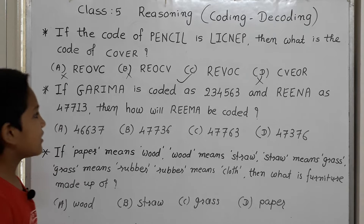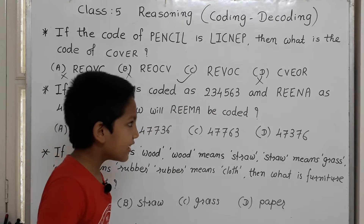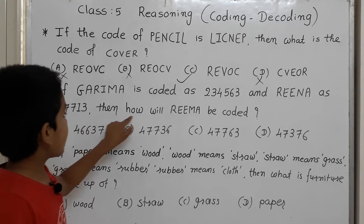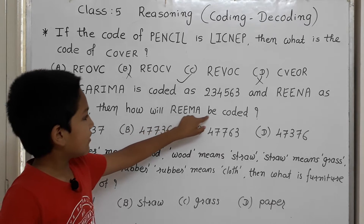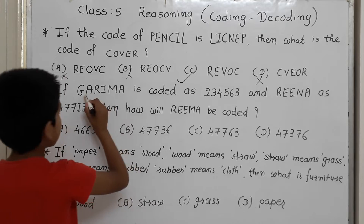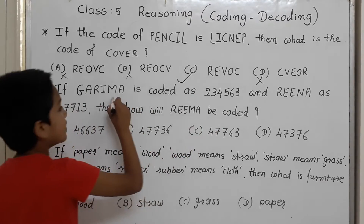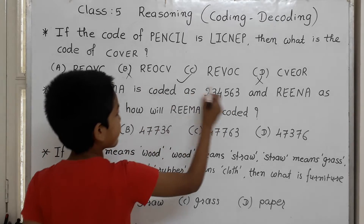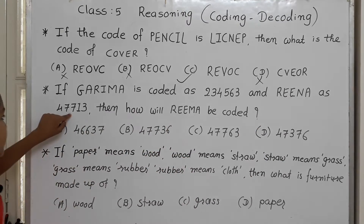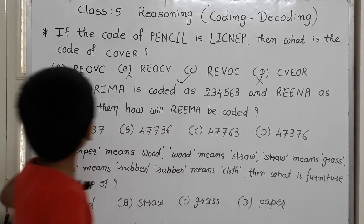Next question: If Garima is coded as 2-3-4-5-6-3 and R-E-N-A as 4-7-7-1-3, then how will Rima be coded? So G is 2, A is 3, R is 4, I is 5, M is 6, A is 3. Then R is 4, E is 7, N is 1, and A is 3.